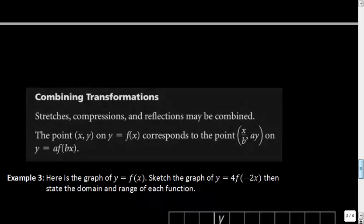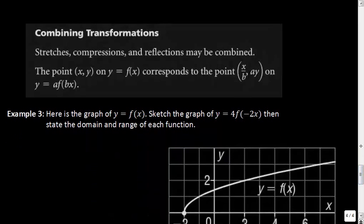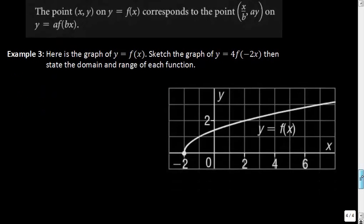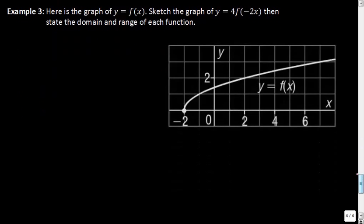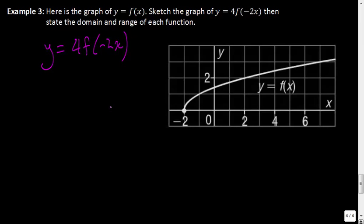Lastly, let's take a look at what happens when we combine transformations. We're just going to be moving it in both the horizontal and vertical directions. Example 3 states: here is the graph of y = f(x). Sketch the graph of y = 4f(−2x), then state the domain and range of each function. We have to do two different things right here.